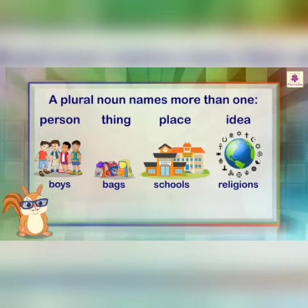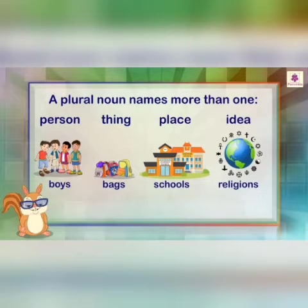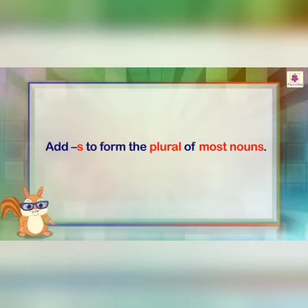So when we refer to more than one thing, we convert a singular noun into a plural noun. There are some basic rules that you will learn and understand. The first basic rule is: add -S to form the plural form of most nouns when we refer to more than one thing.